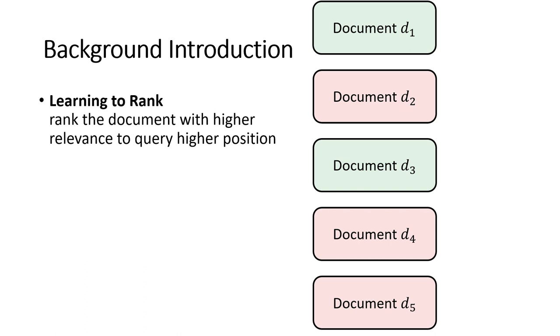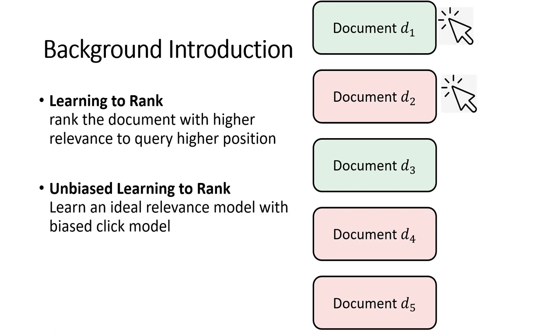But for this kind of Learning to Rank, we need the ground truth relevance, which is very hard to achieve in real world datasets. So instead of using true relevance scores, people use clicks as the supervised signal. However, clicks can be biased, so Unbiased Learning to Rank becomes a very important topic.